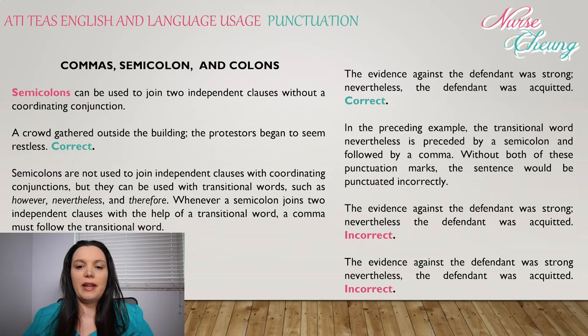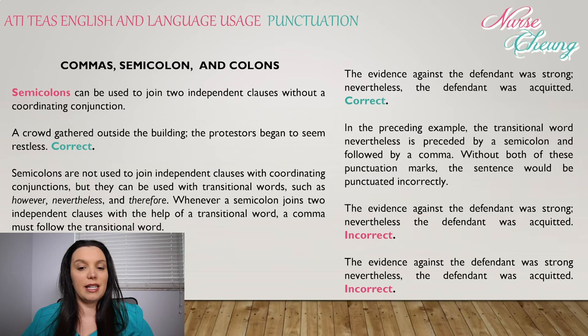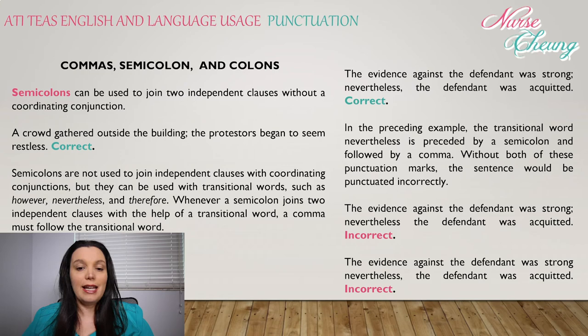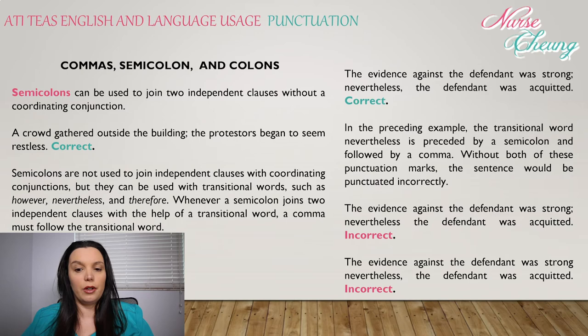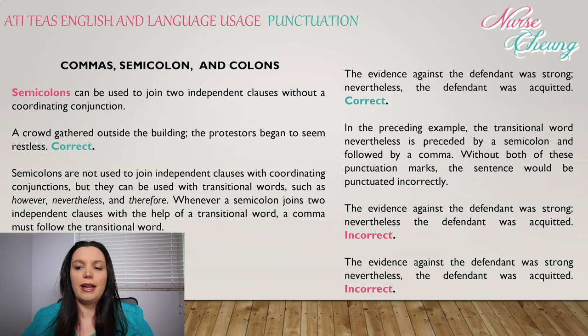Semicolons can be used to join two independent clauses without a coordinating conjunction. For example: 'A crowd gathered outside the building; the protesters began to seem restless.' — This is correct. Semicolons are not used to join independent clauses with coordinating conjunctions, but they can be used with transitional words such as however, nevertheless, and therefore. Whenever a semicolon joins two independent clauses with a transitional word, a comma must follow the transitional word. For example: 'The evidence against the defendant was strong; nevertheless, the defendant was acquitted.' — This is correct.